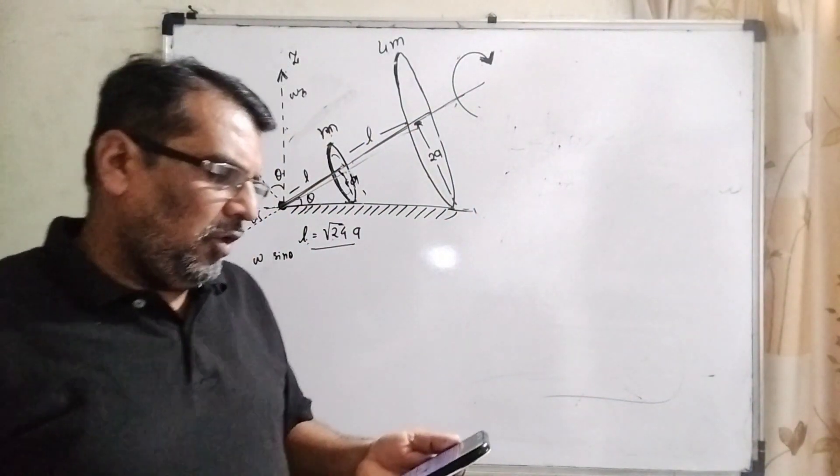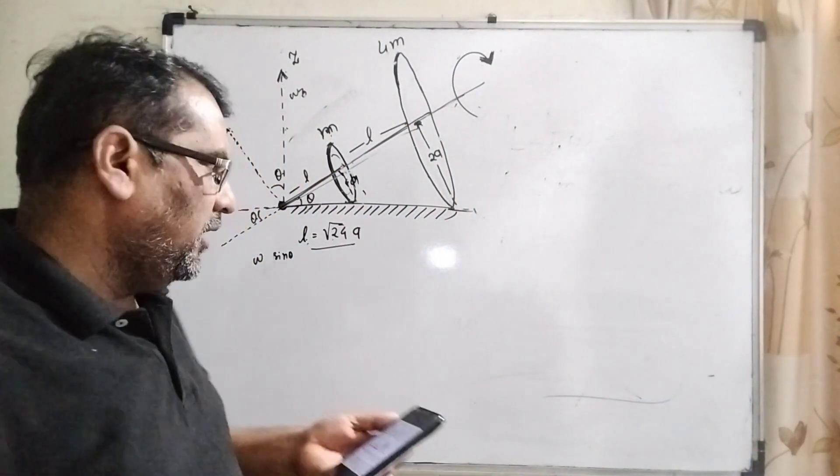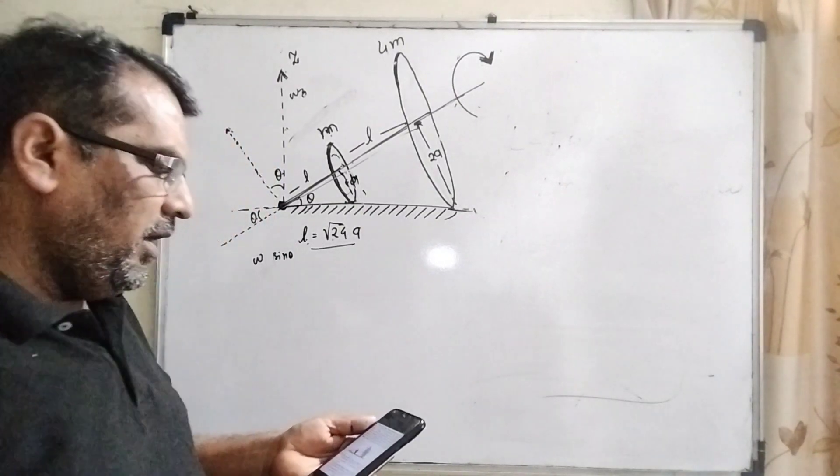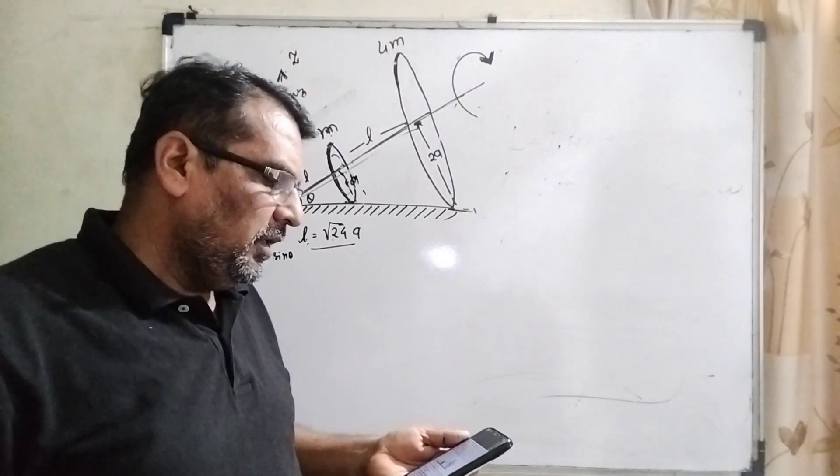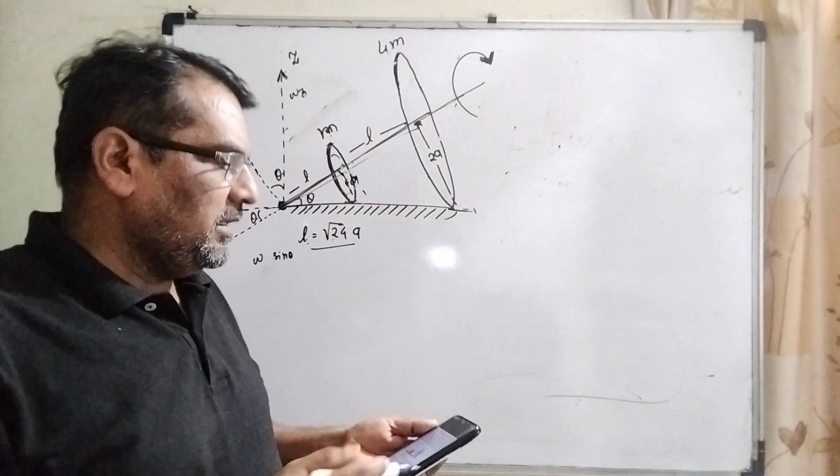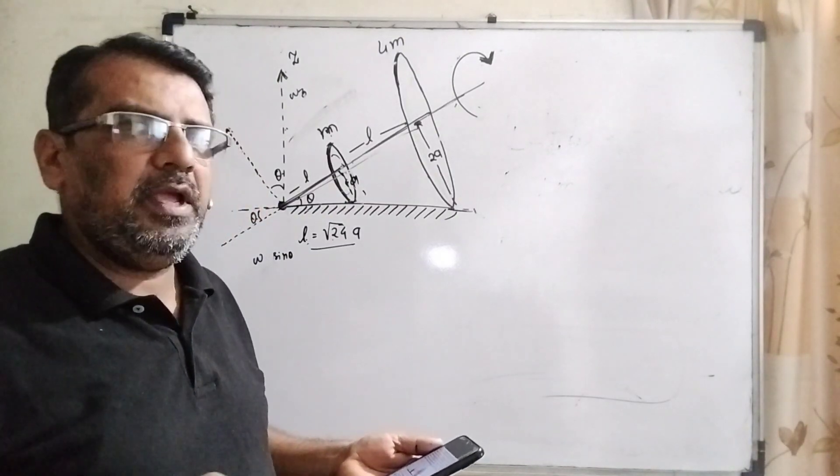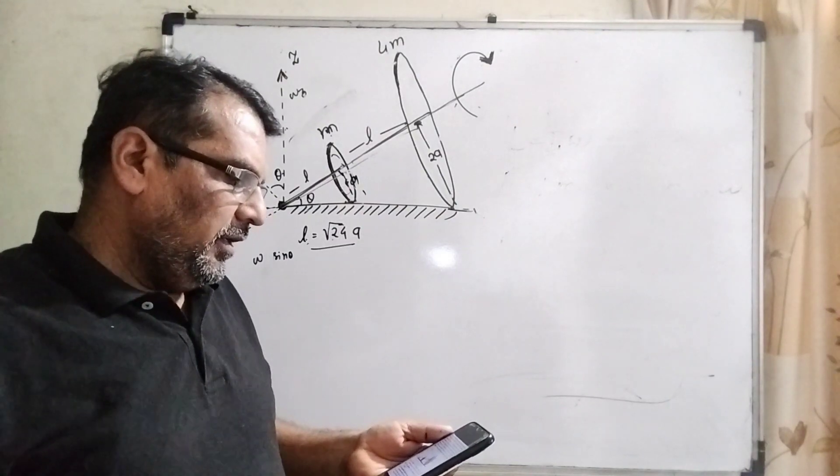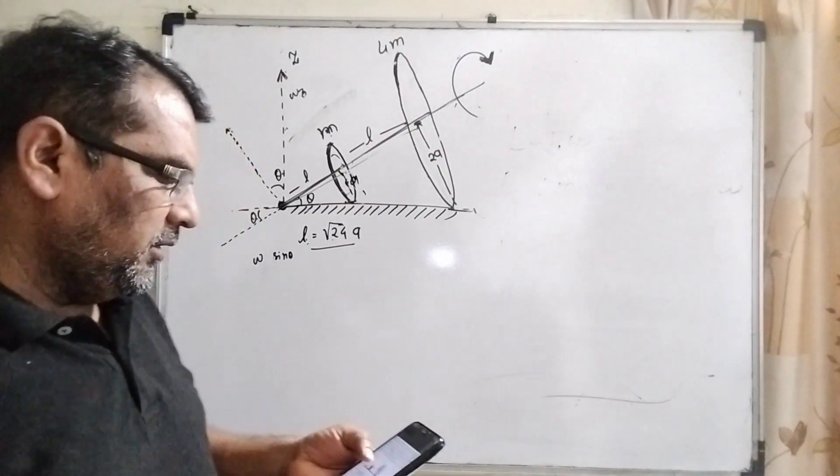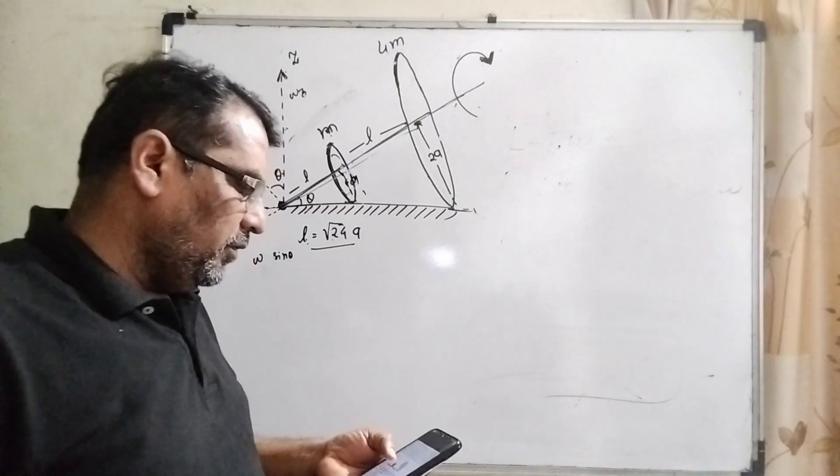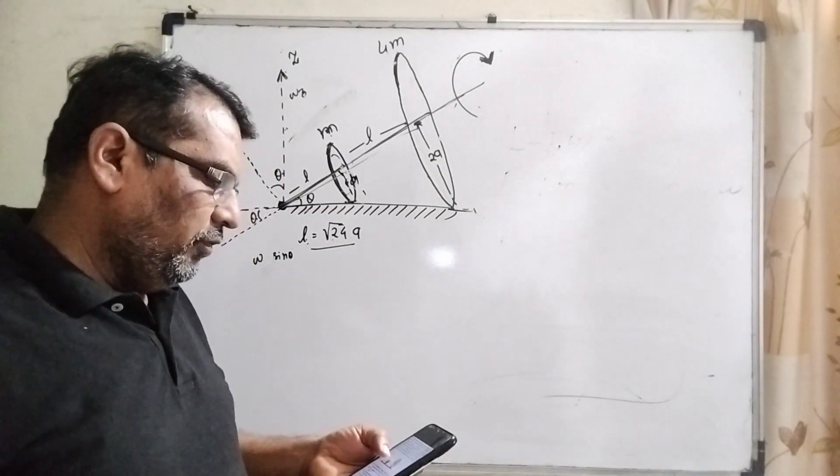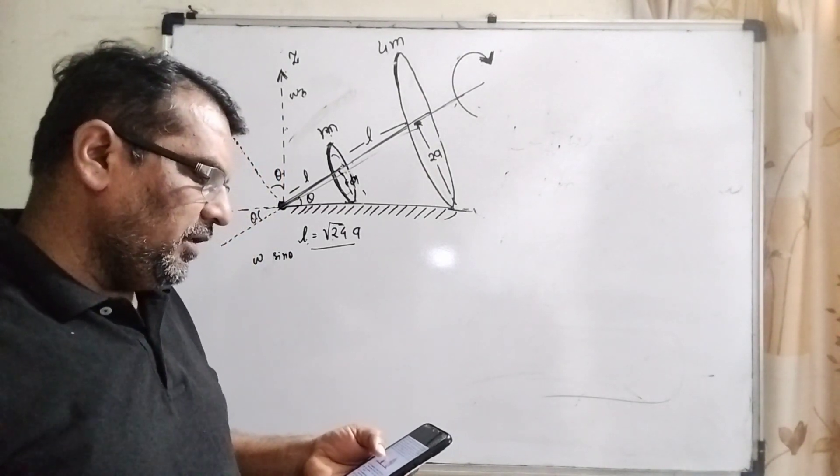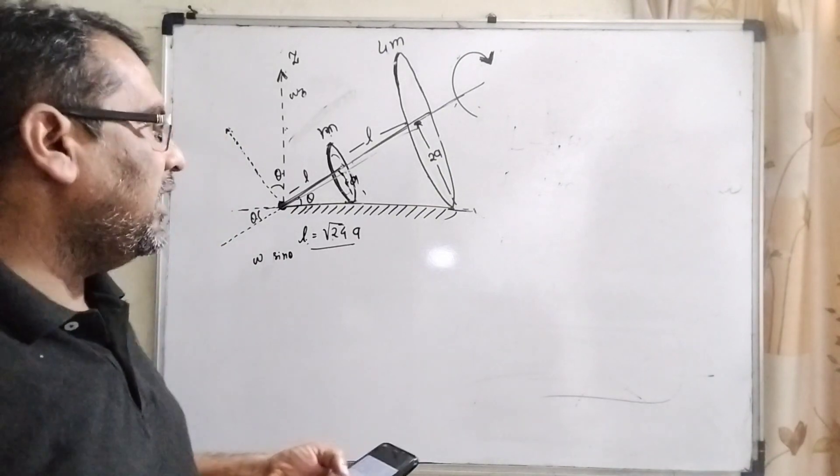Let's see the third option. Option C is also wrong because here given 81 m a square omega, and our answer last time we already solved was 83 m a square omega. So therefore C is also incorrect. And last point, the center of mass of the assembly rotates about the z-axis with an angular speed of omega by 5. Let's see if this answer will be correct or not.